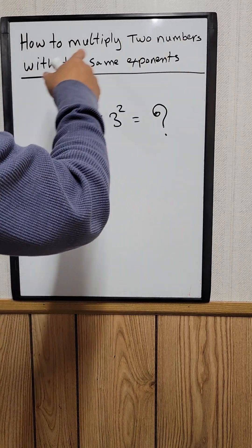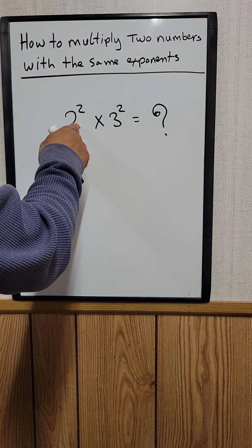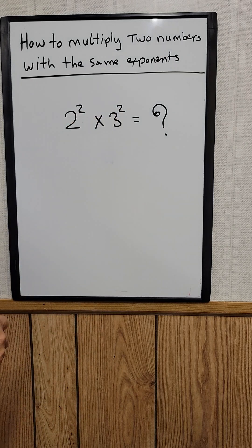How to multiply two numbers with the same exponent. For example, right here, 2 squared times 3 squared. What is that equal to?